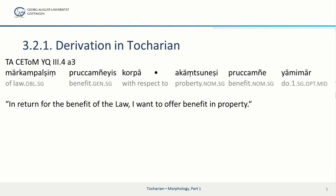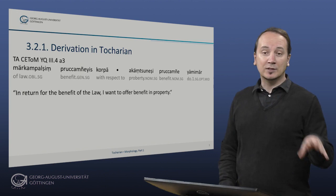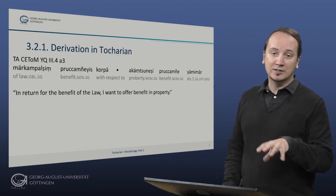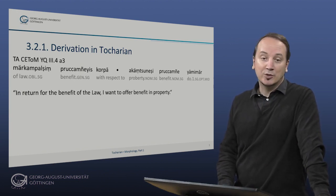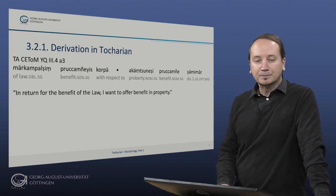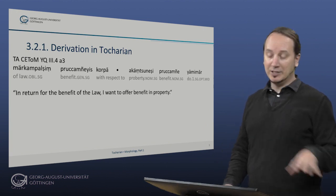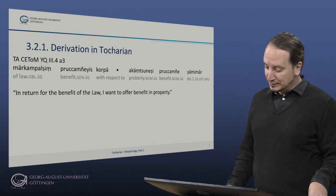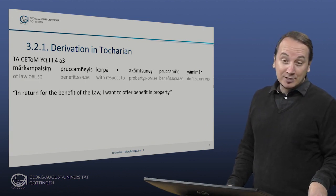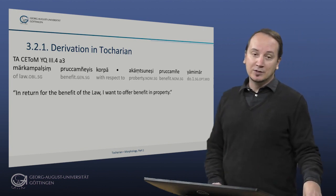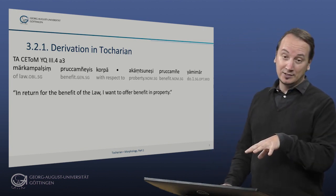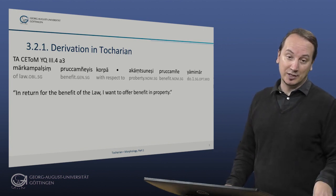In the passage, the meaning is: 'In return for the benefit of the law, I want to offer benefit in property.' We are interested in the adjective derived from 'myrkampal', the Tocharian word for Buddhist law or Dharma, and also in 'akuntzuneshi', the adjective derived from 'akuntzune' meaning possession or property. Even though these forms are morphologically adjectives, they function as genitives in this passage.